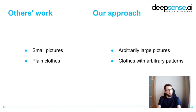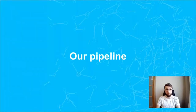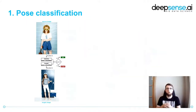We place attention on those two points. We would like to work with arbitrarily large pictures and with clothes with arbitrary patterns. And this is our pipeline. It consists of several steps with several models. We used mainly the Deep Fashion 2 dataset to train the models. Let's go through the pipeline step by step. Step one: pose classification.